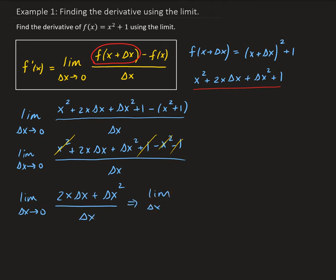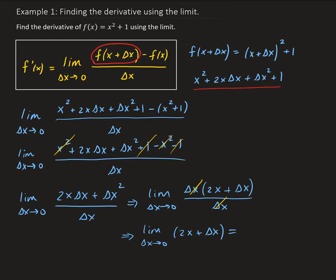We can factor out delta x from the numerator, which gives us delta x times the quantity 2x plus delta x, all divided by delta x. By factoring out delta x, it cancels with the denominator, leaving us with the limit as delta x goes to zero of 2x plus delta x. As delta x goes to zero, this gives us 2x.